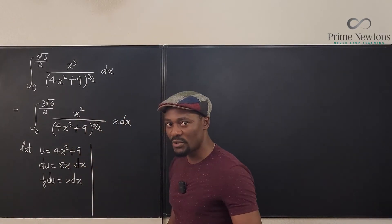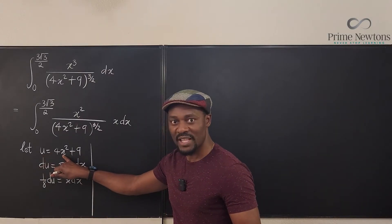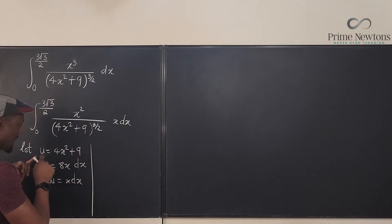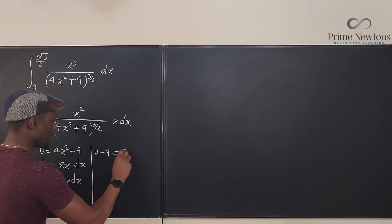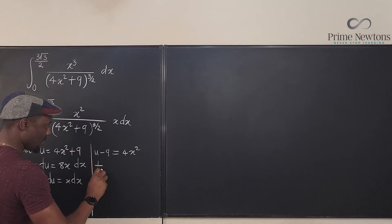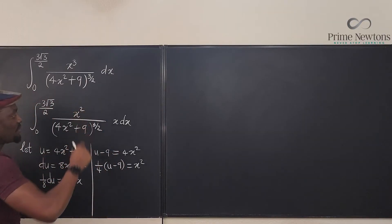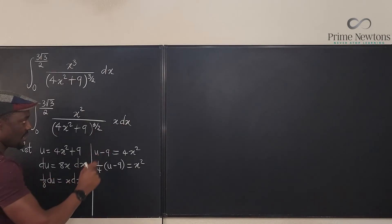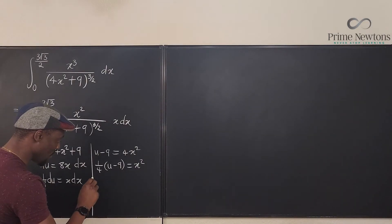I need to do more work because I also need to replace x². I have to do some algebra to isolate x² and write it in terms of u. From u = 4x²+9, moving 9 over gives u − 9 = 4x², so dividing by 4: x² = (u − 9)/4. Now I have what goes on top. I know what's under — it's u raised to 3/2. I need to replace these two things, so let's also change the limits of integration.